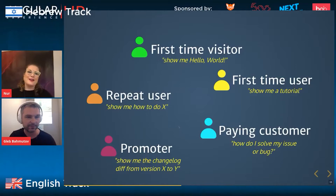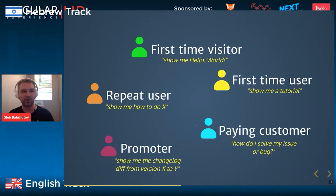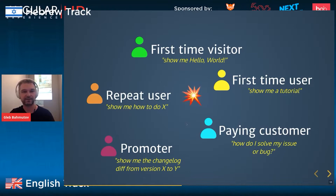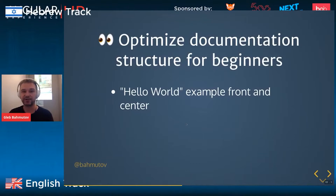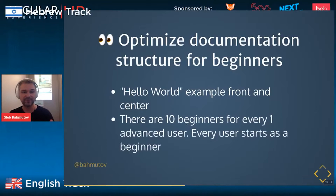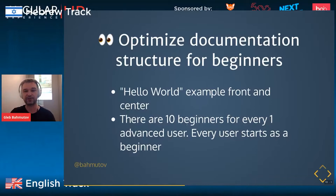Imagine all these personas — they all want their questions answered first, but there's a contradiction. Do you show hello world examples first or something advanced? I suggest you optimize your documentation structure for beginners. Hello world should be the first thing, because there are more beginners than advanced users, and every advanced user started as a beginner. Optimize for beginners, and then add all the documentation and make it searchable.